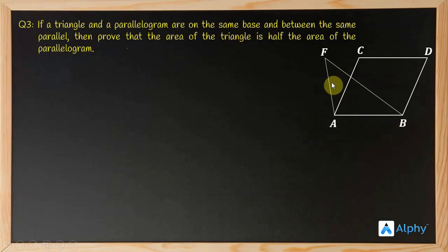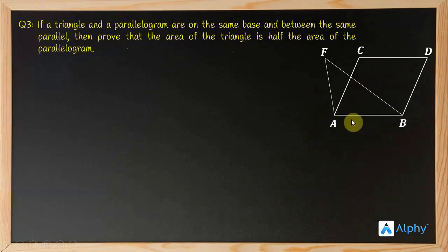So it is true: the parallelogram's area is base into height and the triangle's is half into base into height. Therefore the area of the triangle is half that of the parallelogram. And it doesn't matter where the triangle is drawn — here or here — as long as the height and base are the same, the area is the same.